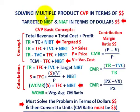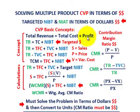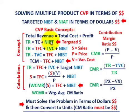What we're going to be going over here is solving for multiple-product cost-volume-profit analysis in terms of dollar amounts. We're going to be solving for some targeted net income before taxes and net income after taxes in terms of dollar amounts. For cost-volume-profit analysis, the basic concept is that total revenues equal total cost plus some profit. So our total revenue TR equals our total cost TC plus some net income before taxes — some targeted amount.